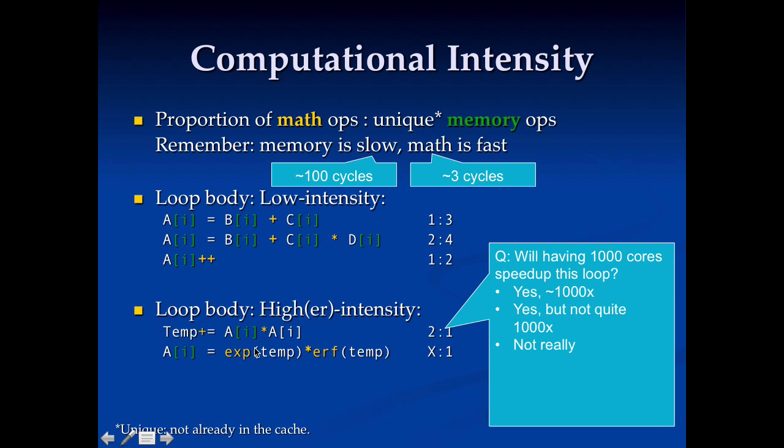Now let's take a look at the implications of this. Say I write this code here, and I've got code that's doing two math operations for every one memory load. If I have 1,000 cores to run this on, and it takes 100 cycles for memory and 3 cycles for the math, how much am I going to be able to speed this up? Am I going to get a big speed up from having 1,000 cores?